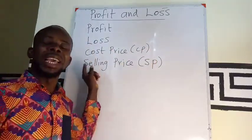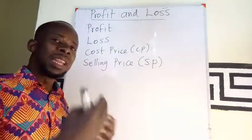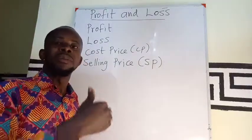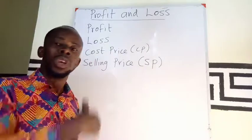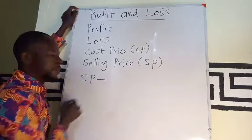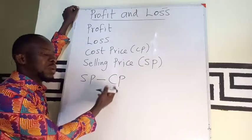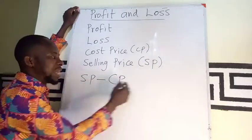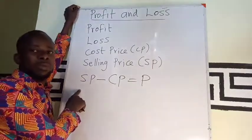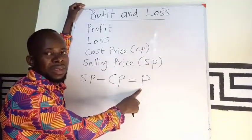In case your selling price is greater than your cost price — if the selling price of the article is more than the cost price — then it means you have a profit; it means you gain. So if selling price (SP) is greater than cost price, meaning if I subtract the cost price from the selling price, I'll be having the profit. So when the selling price is greater than the cost price, I'm making a profit, I'm gaining.